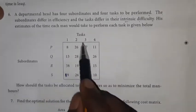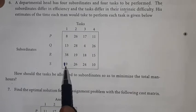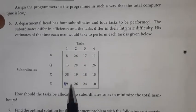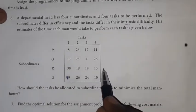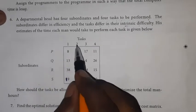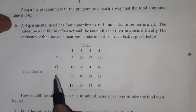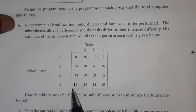This is the problem: subordinates P, Q, R, S and tasks 1, 2, 3, 4. We need to do assignment - one job per subordinate so as to minimize the total man-hours. We need to use the Hungarian method.